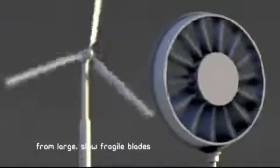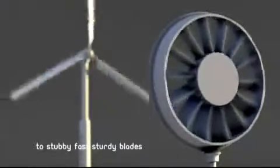While traditional turbines use fragile cantilevered beams, Flowdesign's shorter, stronger rotor benefits from a hoop.